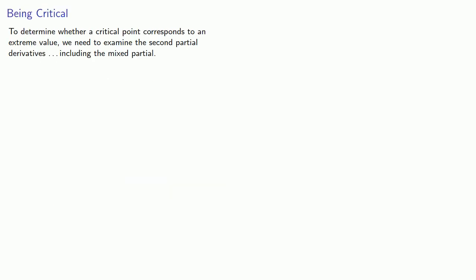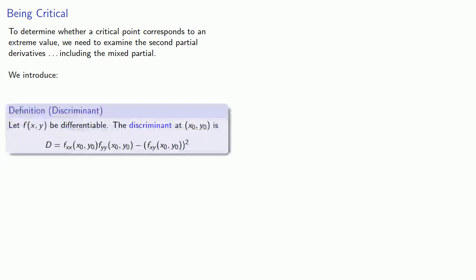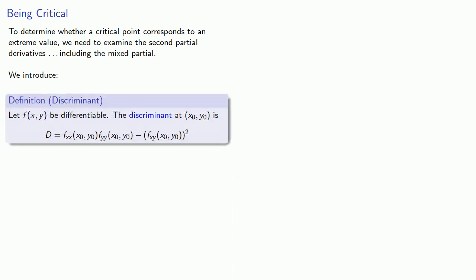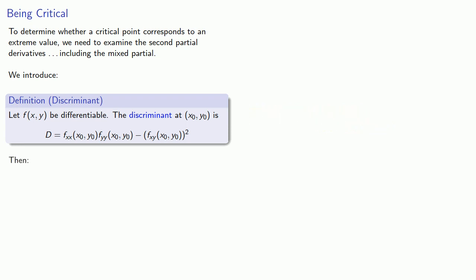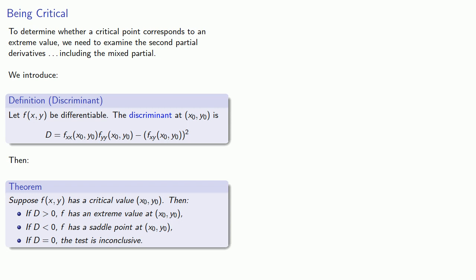To determine whether a critical point corresponds to an extreme value, we need to examine the second partial derivatives, including the mixed partial. We introduce the following idea: let f of x, y be a differentiable function of two variables. The discriminant at some point is given by a formula involving those second partials. If our discriminant is positive, f has an extreme value. If our discriminant is negative, f has a saddle point. And if our discriminant is zero, the test is inconclusive. Note that at best, the discriminant will tell us that we have an extreme value, not whether it's a maximum or a minimum.